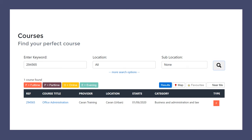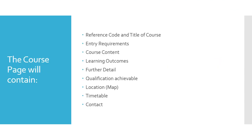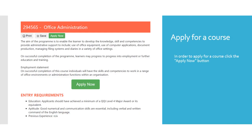Click the blue hyperlink to continue. The next page that will open will have the reference code and title of the course, the entry requirements, the course content, the learning outcomes, further detail, qualification achievable, location including the map, the timetable, and contact information to do with that course. When you read the course content and are happy that it suits your needs, you can apply for the course.